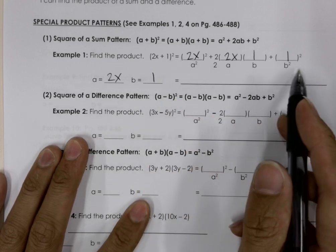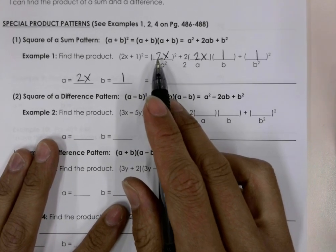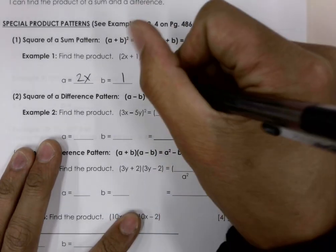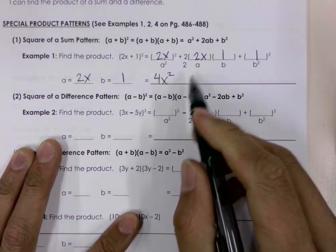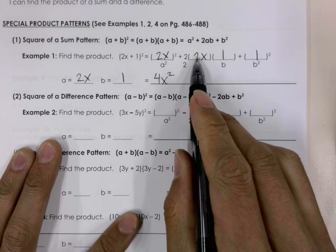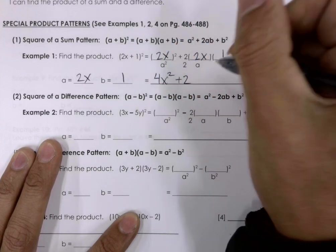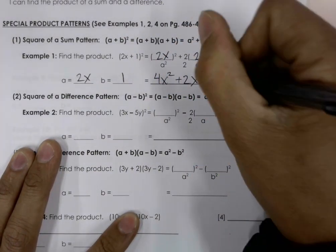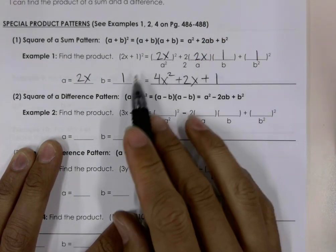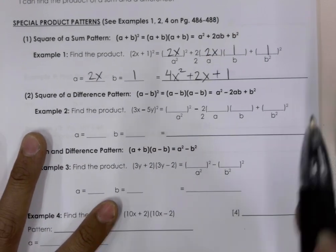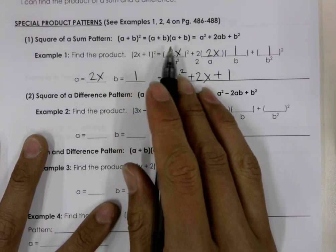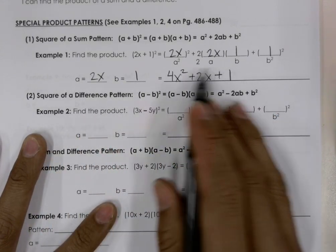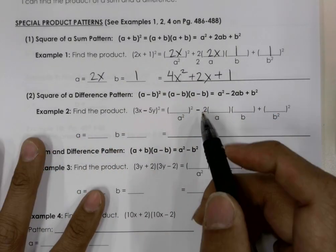So then if we work all of this out, we can get our final answer. So (2x)² would be 2x times 2x, which is 4x². Plus 2 times 2 times 1 is 2, so plus 2x. And then over here we'll have 1², which is just 1. And so we have our final answer. So if you have a sum that is taken to the power of 2, we can use this pattern to quickly find our answer instead of using the FOIL method.